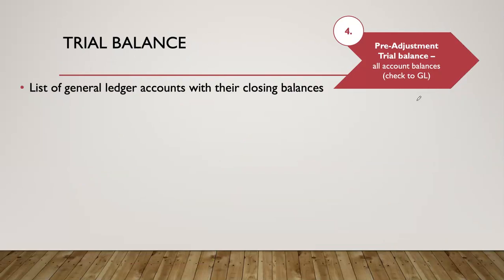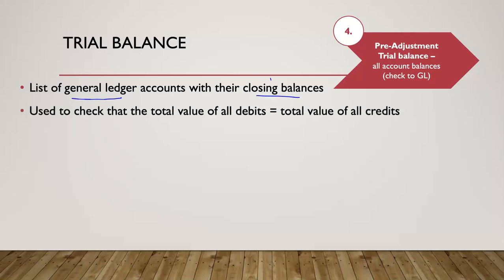A trial balance is essentially a list of every general ledger account with their closing balance. A closing balance could be either a debit balance or a credit balance, because things go up or down and we record them as debits or credits. Ultimately an account will have more debits or more credits. We use this trial balance mainly to check that our total debits equal the total value of our credits across every single account.